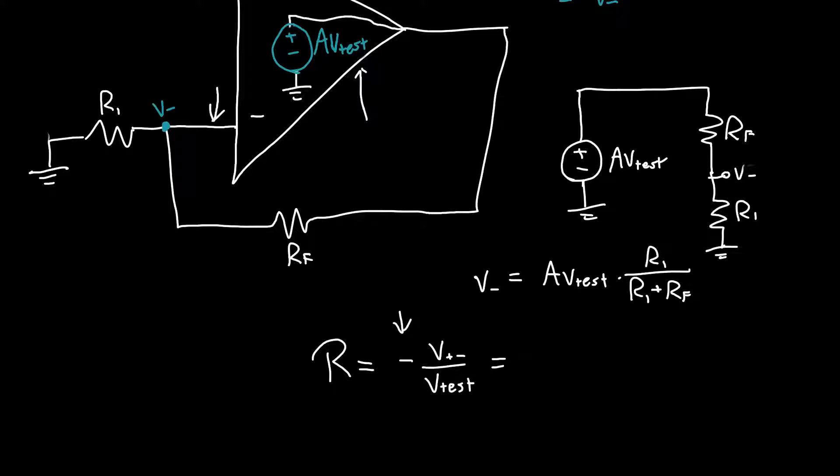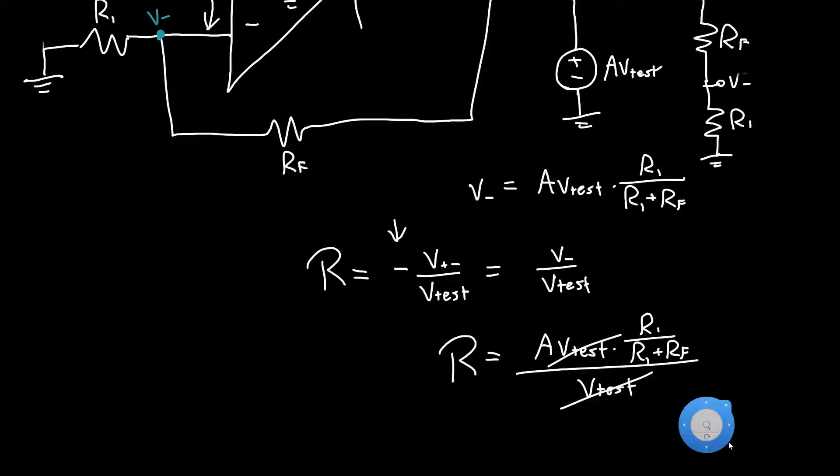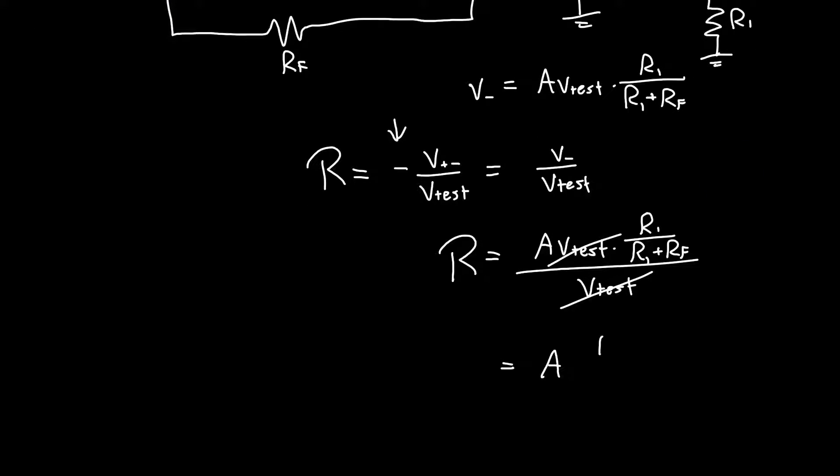V plus minus we said was just minus V minus, so we've got two negatives. Let's just cancel those out real quick so we don't have to deal with them. Now we can just plug in V minus. The return ratio is just A V test times R1 over R1 plus RF over V test. The V tests cancel and we're left with A times R1 over R1 plus RF. That is the return ratio for this op amp.